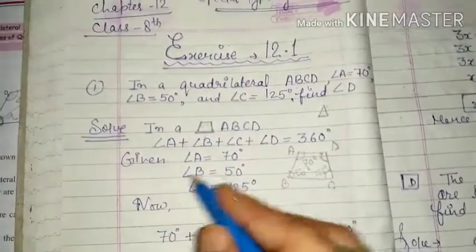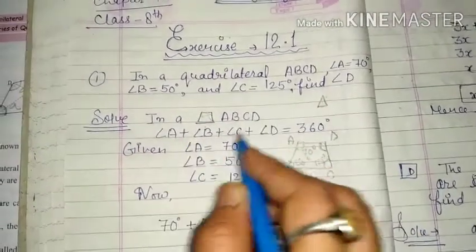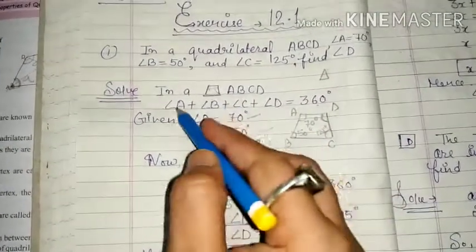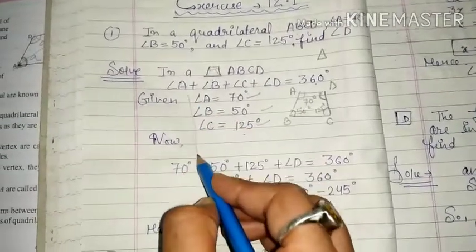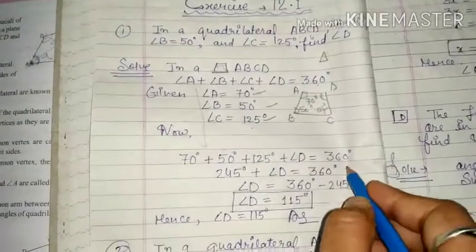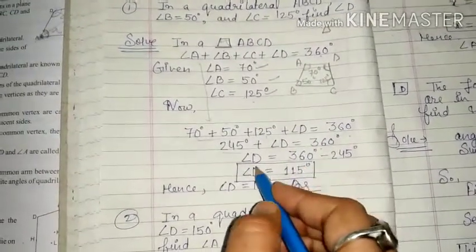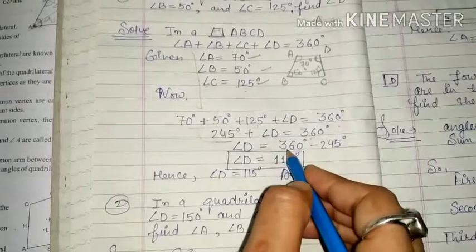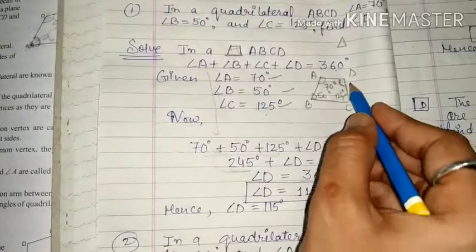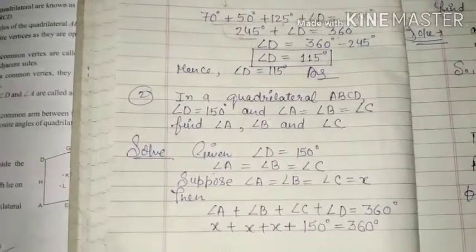For closed figure ABCD, the condition is: angle A plus angle B plus angle C plus angle D equals 360 degrees. We put in the known angles: 245 plus angle D equals 360 degrees. So angle D equals 360 minus 245, which gives angle D equals 115 degrees.